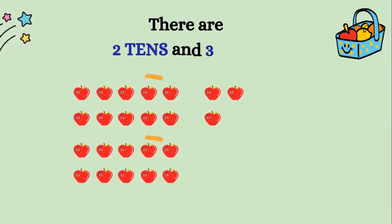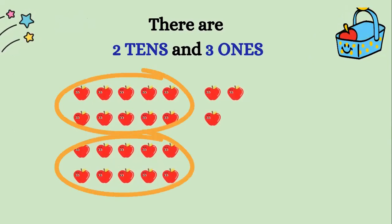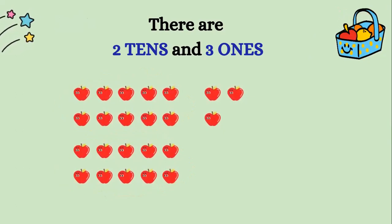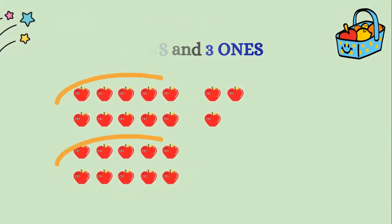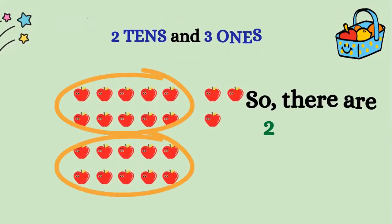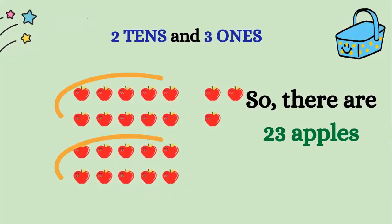Let's try to count these apples by bundling them into groups of tens. There are two tens and three ones. Two tens and three ones make twenty-three apples.